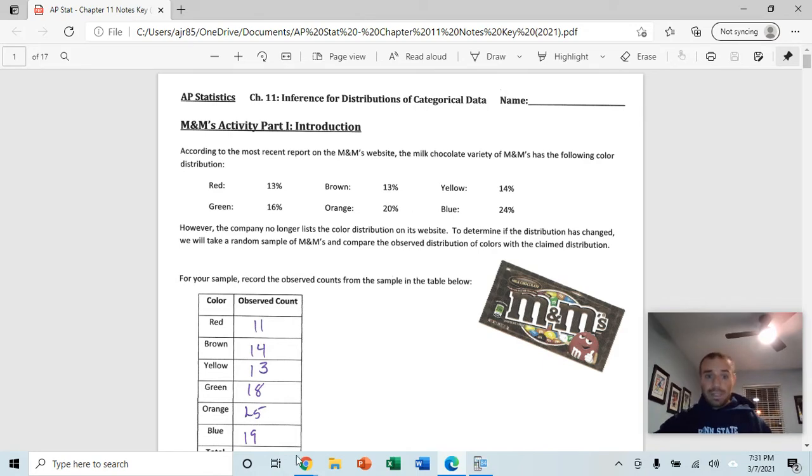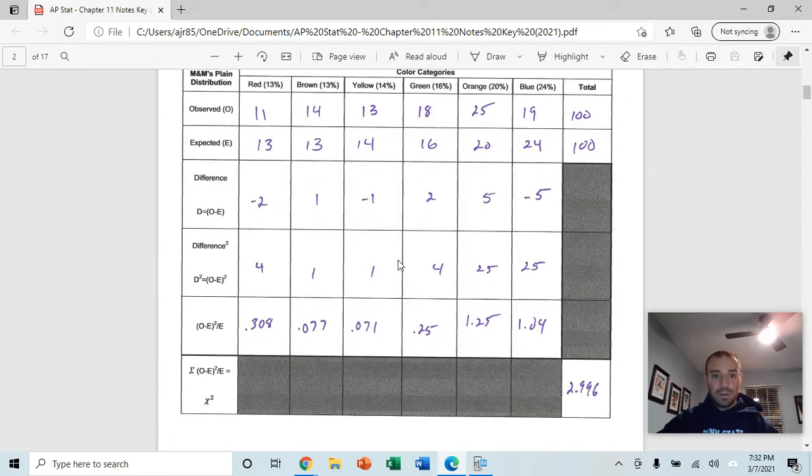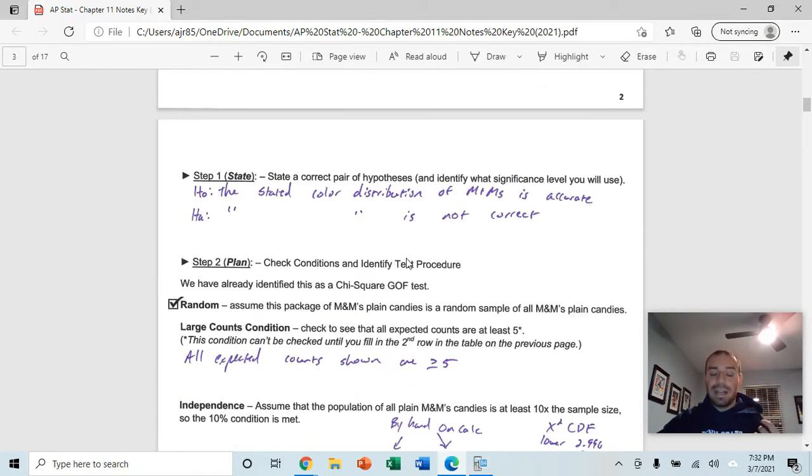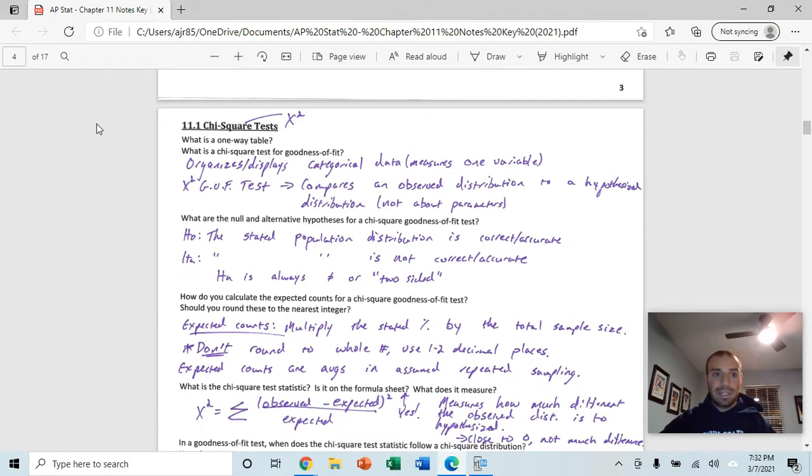We're going to go through this activity in class so we can skip the first few slides. You'll actually run a chi-squared test, chi-squared goodness of fit test related to M&Ms. So we can head to page four of the notes and we'll talk about what we are dealing with here.